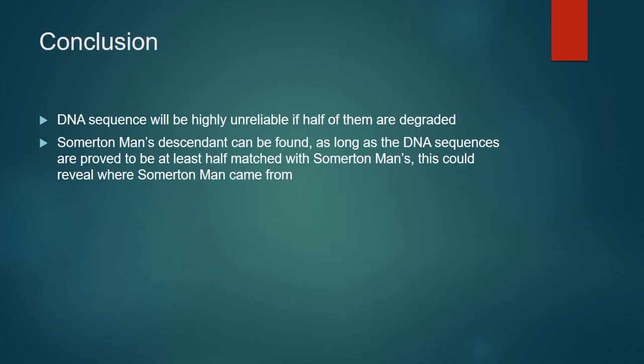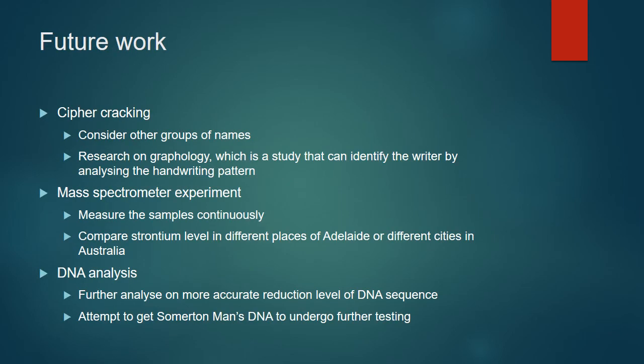Our conclusion is that the DNA sequence becomes highly unreliable once degraded. Descendants of the Somerton Man can be found as long as DNA sequences are at least half matched. For future work: Task 1 could consider other groups of names and research graphology to identify the writer by handwriting analysis. Task 2 could measure samples continuously rather than discretely, and compare strontium levels across different Adelaide locations or Australian cities. For DNA analysis, further work on more accurate reduction levels and an attempt to obtain the Somerton Man's actual DNA are recommended.